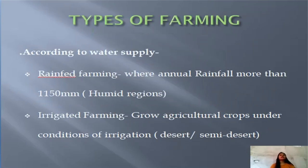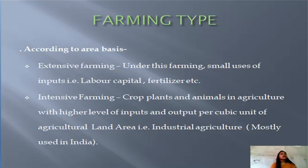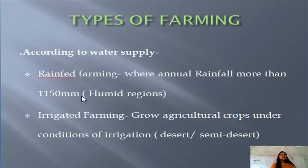Now we will see the types of farming. According to water supply, there are two types: rainfed farming and irrigated farming. In rainfed farming, annual rainfall is more than 1150 mm. According to area basis, there are also two types of farming.